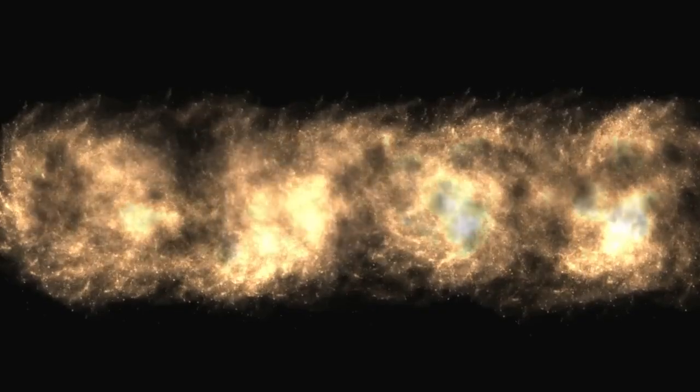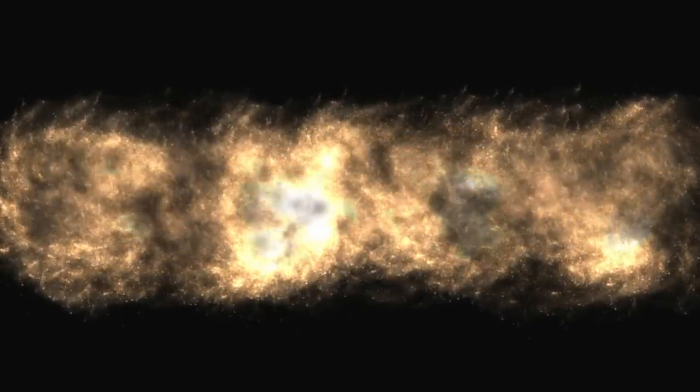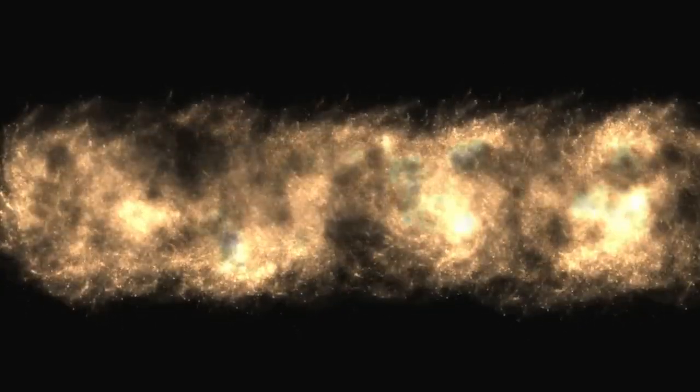Every hour it travels, gravitational tugs from the Sun, Jupiter, and Mars adjust its path by micrometers per second, tiny changes that become enormous across tens of millions of kilometers.